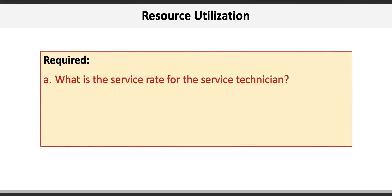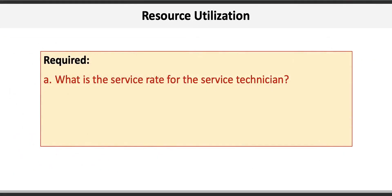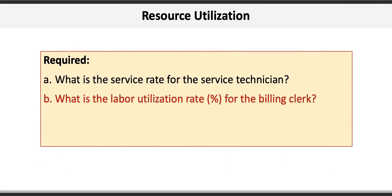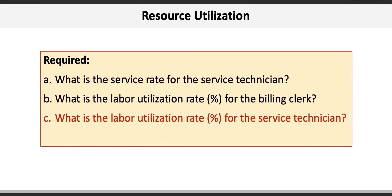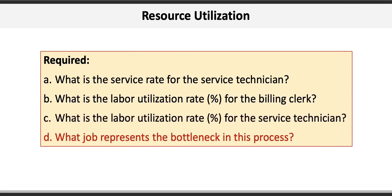There are four requirements for this problem. Requirement A asks us to calculate what the service rate is for each service technician. Requirement B asks us to determine the labor utilization percentage for a billing clerk. Requirement C is looking for the labor utilization rate percentage for the service technician. Requirement D asks what job represents the bottleneck in the process. So let's get going.